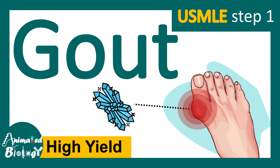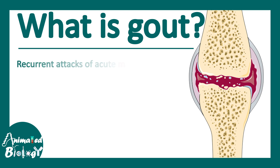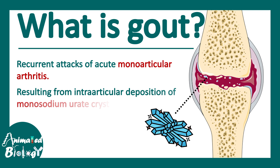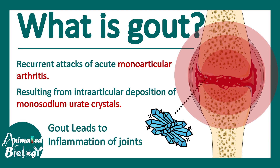In this video of the USMLE high yield series, let's talk about gout. Gout is a recurrent attack of acute monoarticular arthritis resulting from intraarticular deposition of monosodium urate crystals. This deposition leads to inflammation of joints and pain.